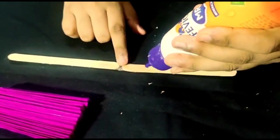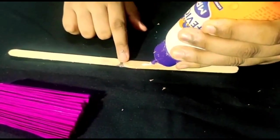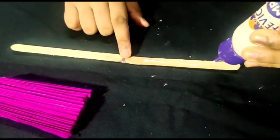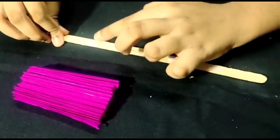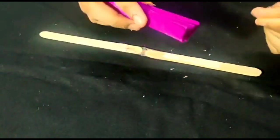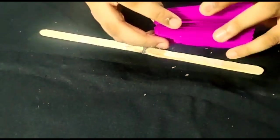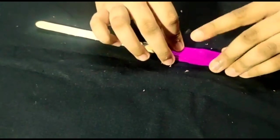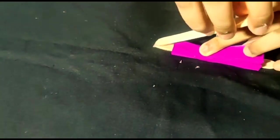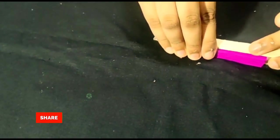Apply glue as shown in video. Now take the paper folding and fix it in the ice cream stick. Make sure only the first layer of paper is fixed with the stick.